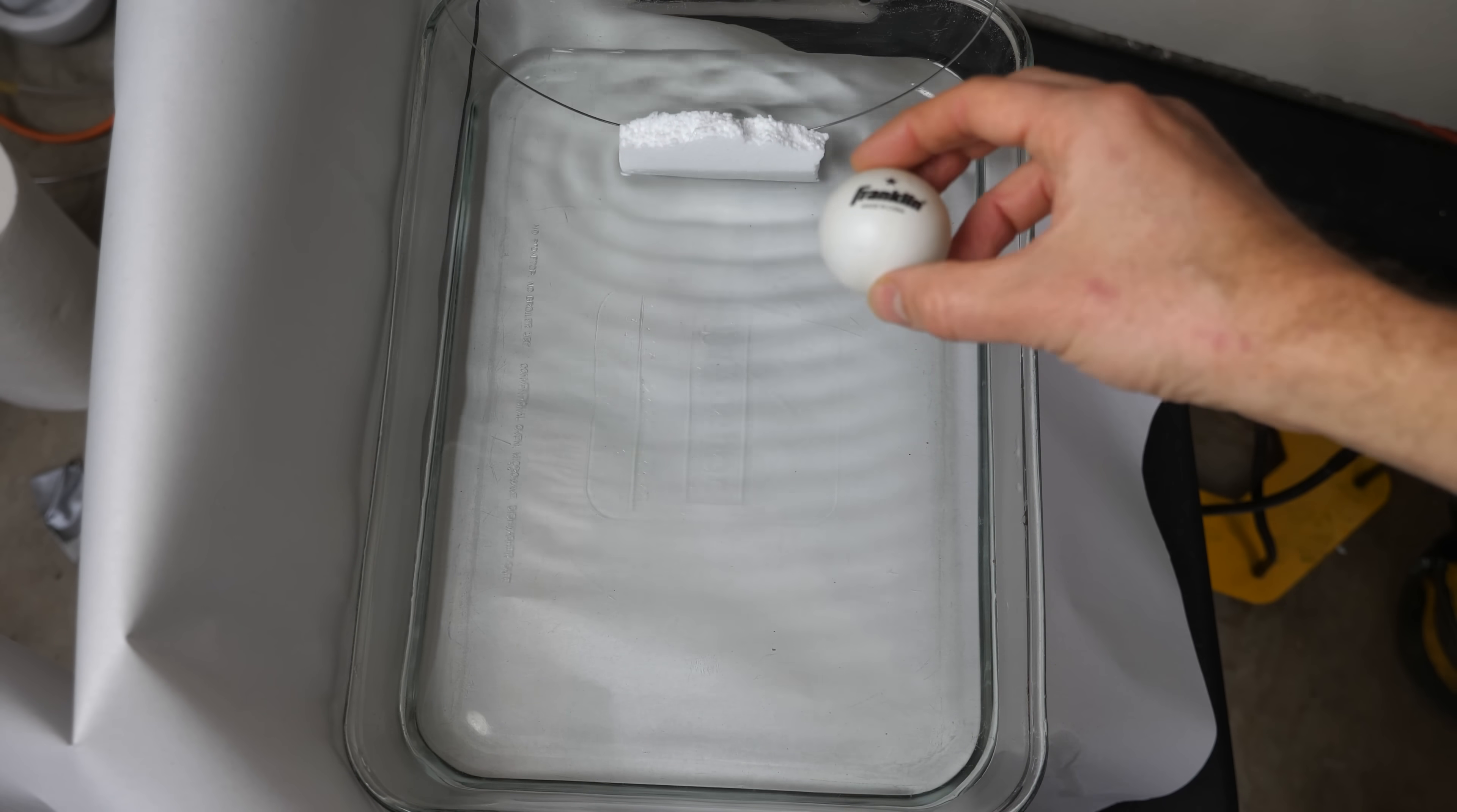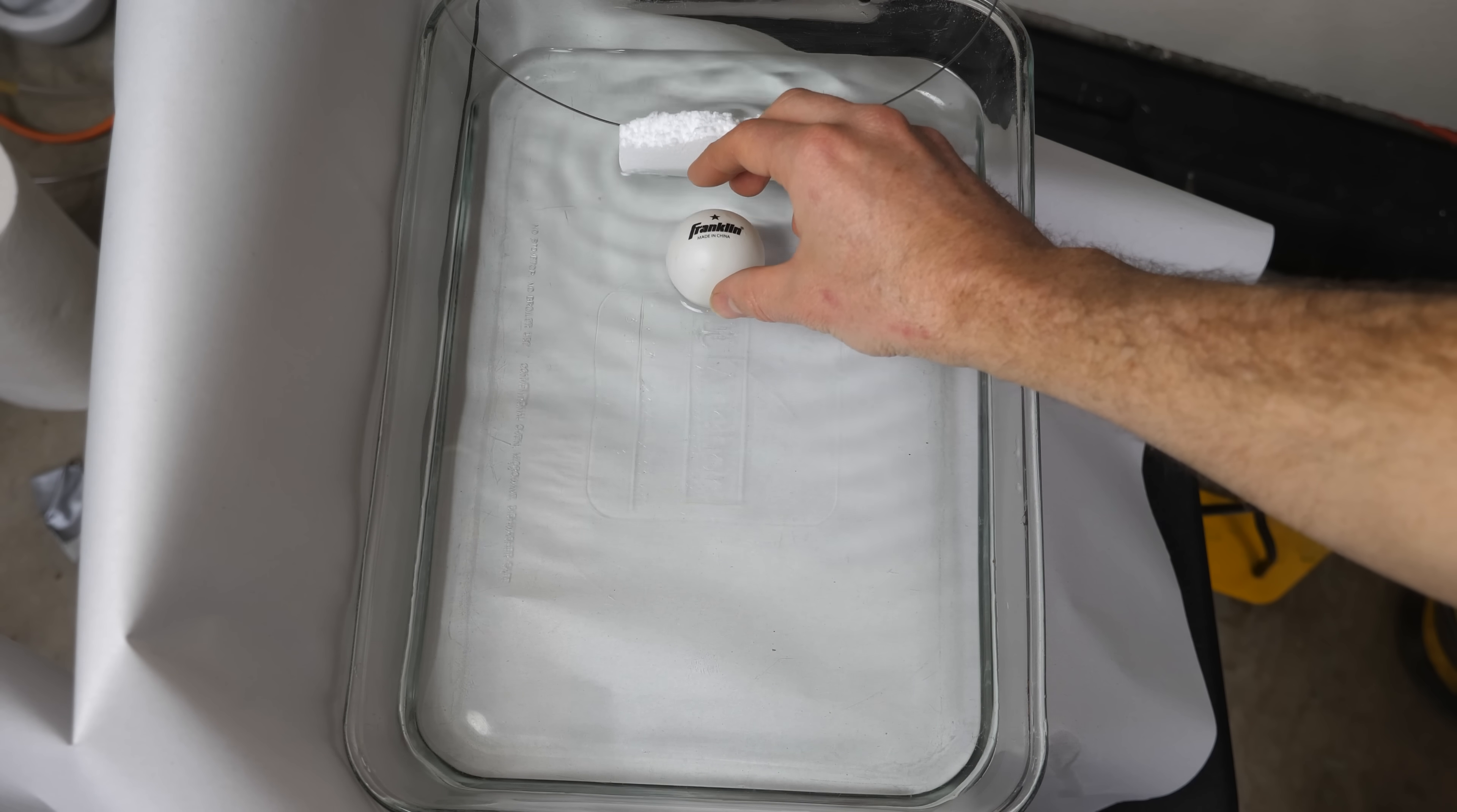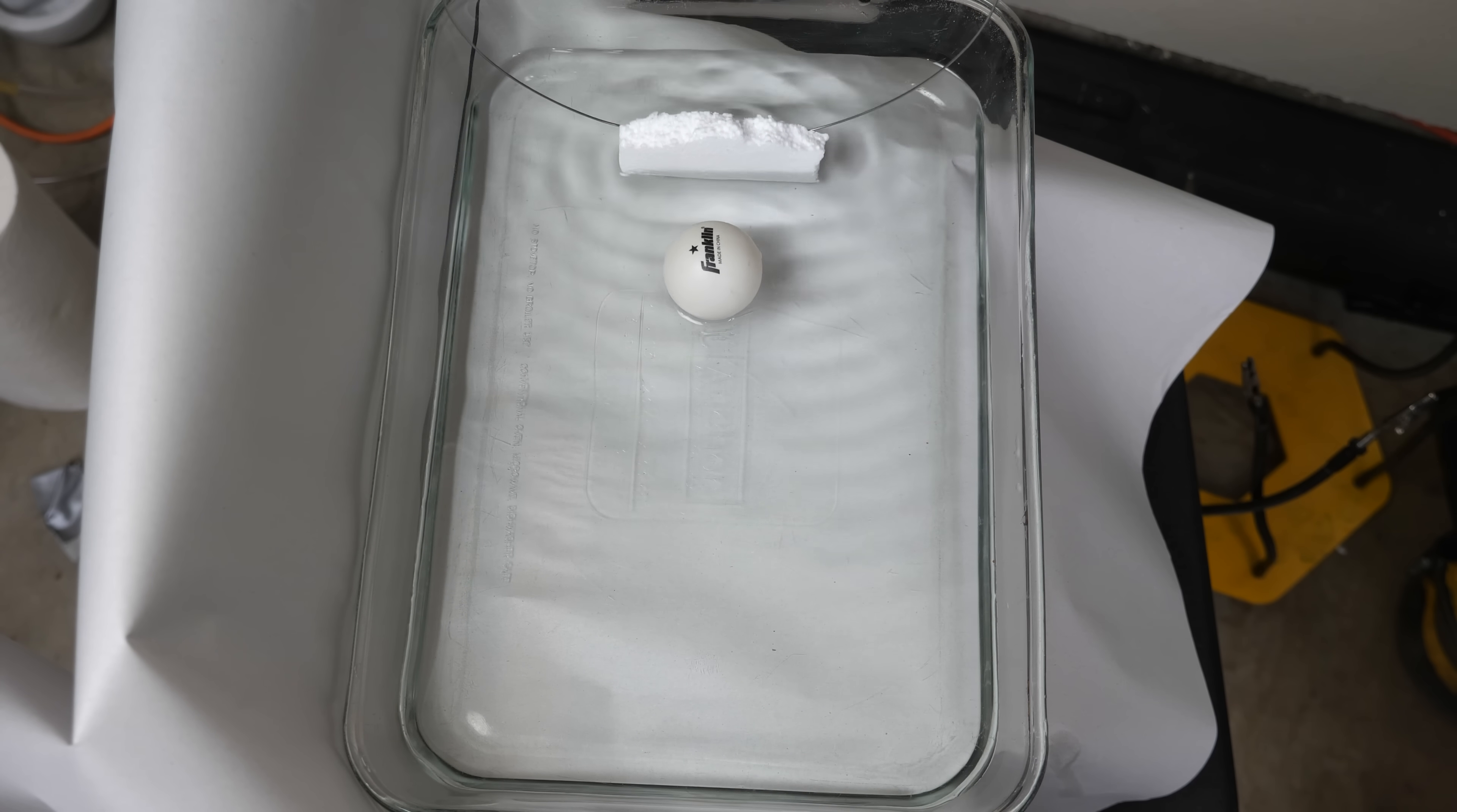So I can grab a ping pong ball and put it near the wave generator, and it'll get pushed away from it. If I put a small boat out on the waves, the boat always gets pushed away from the wave source.